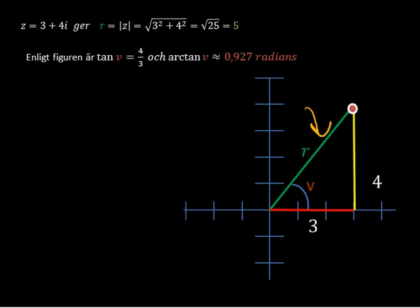So in order to get the absolute value, which is the length of r, we just take the numbers in front of the real portion and the complex portion. Square it, just like you would Pythagoras. And then take the square root and we get the length five.